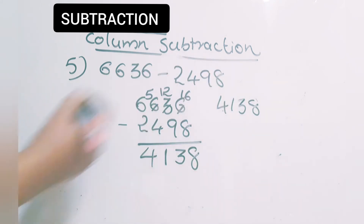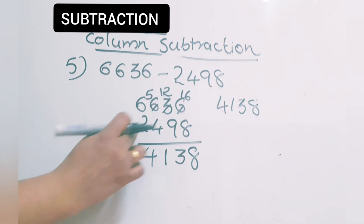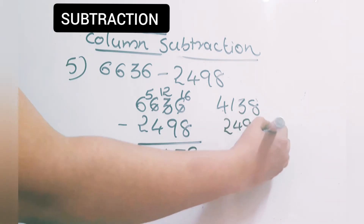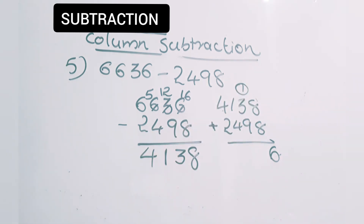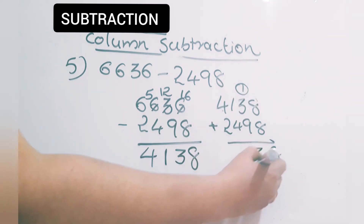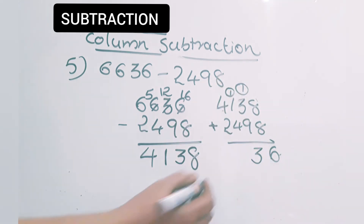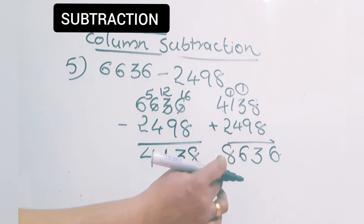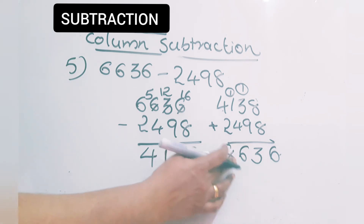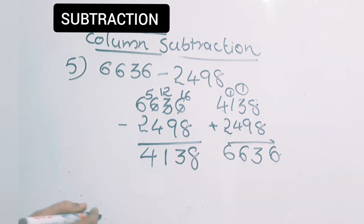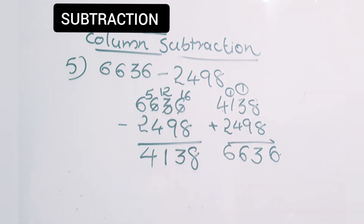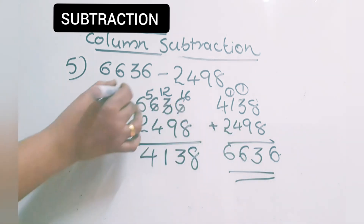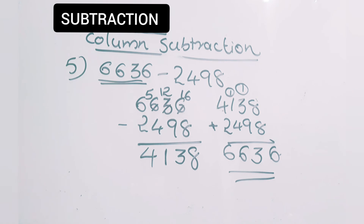Now let's check the answer through addition: 4,138 plus 2,498. 8 plus 8 is 16, carry 1. 3 plus 1 is 4, 4 plus 9 is 13, carry 1. 1 plus 1 is 2, 2 plus 4 is 6. 4 plus 2 is 6. So after addition we got the same number — these two are the same, meaning our subtraction is correct.